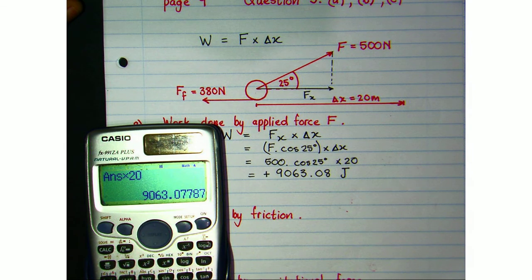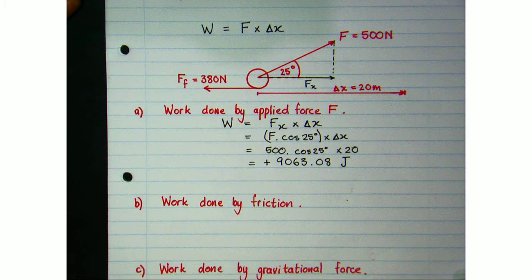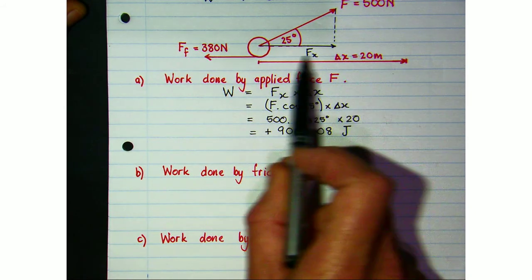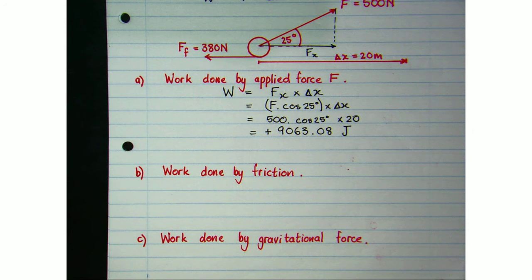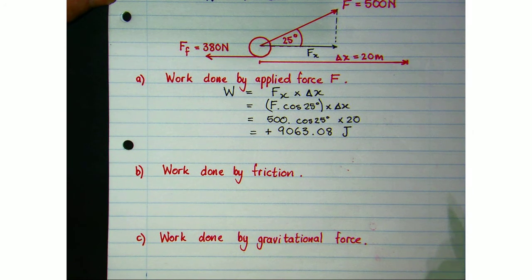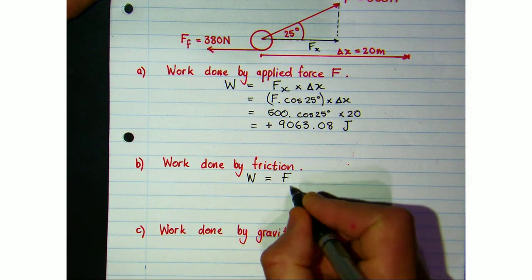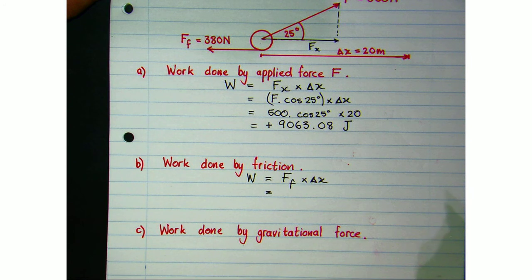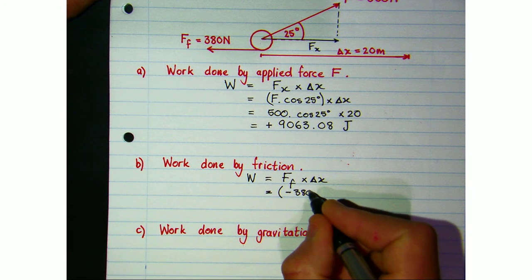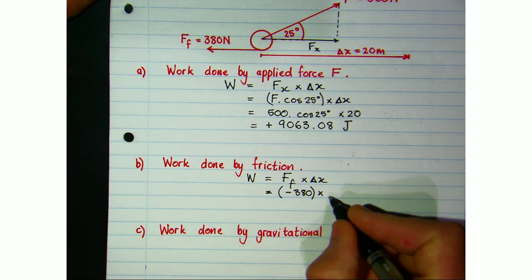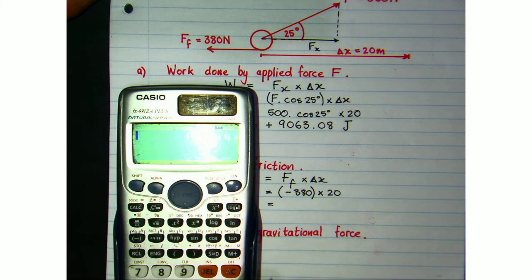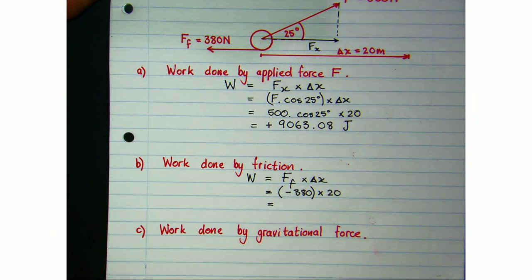At the same time we have a frictional force acting on the roller, so let's calculate the work done by that force. Friction is already parallel to the displacement, so we'll just use the 380 newtons. Remembering that it acts in the opposite direction to the displacement — if we take rightward as positive, then friction acts to the left, so it's negative 380 newtons over 20 meters, giving an answer of negative 7600 joules.